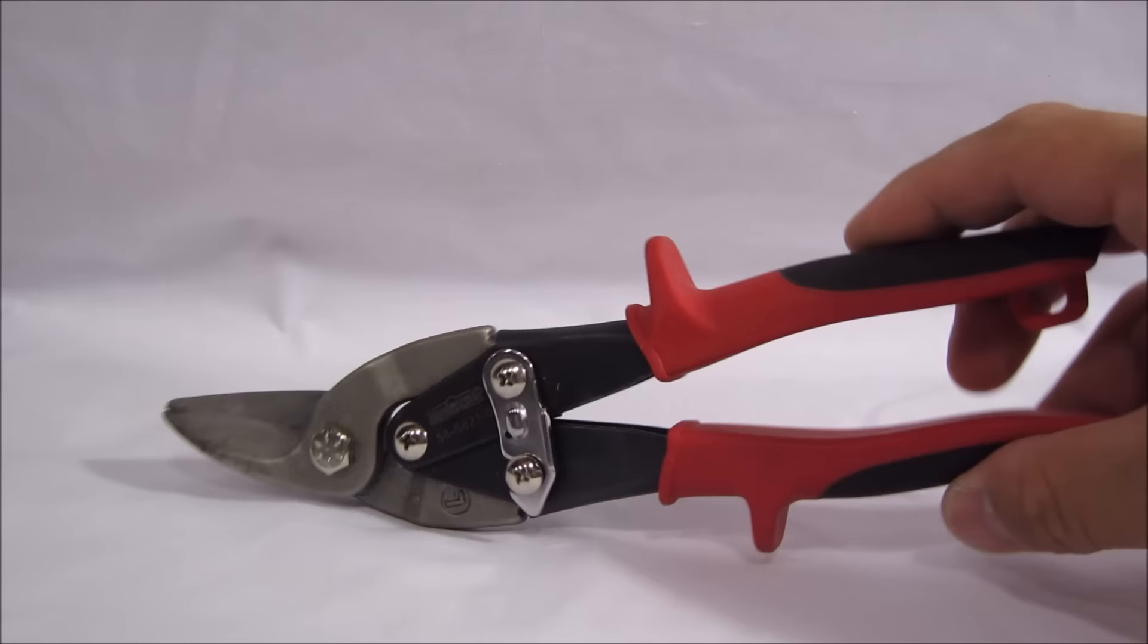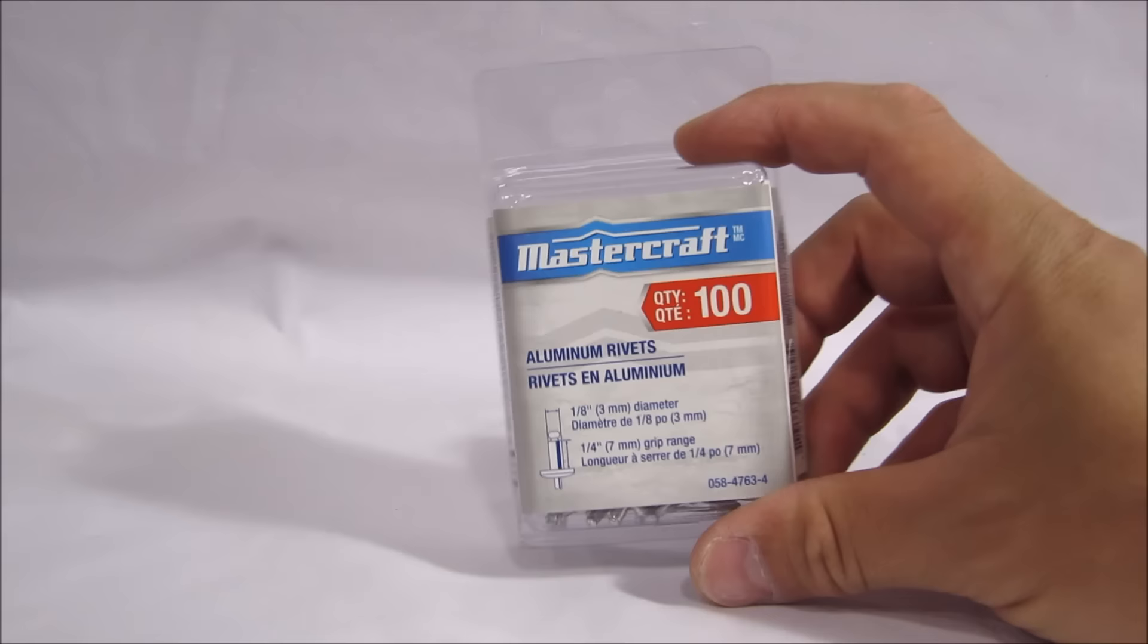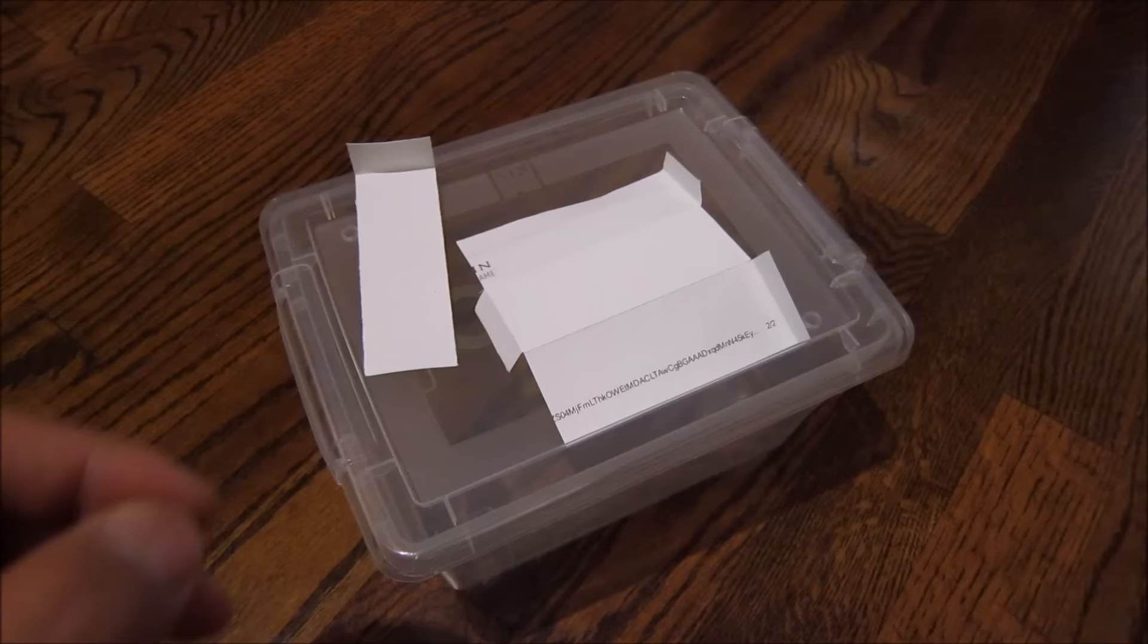For thicker metals, tin snips are a must, and a 1 1/8 inch drill bit, hot glue. You could use Gorilla Glue, but I chose to use aluminum rivets.